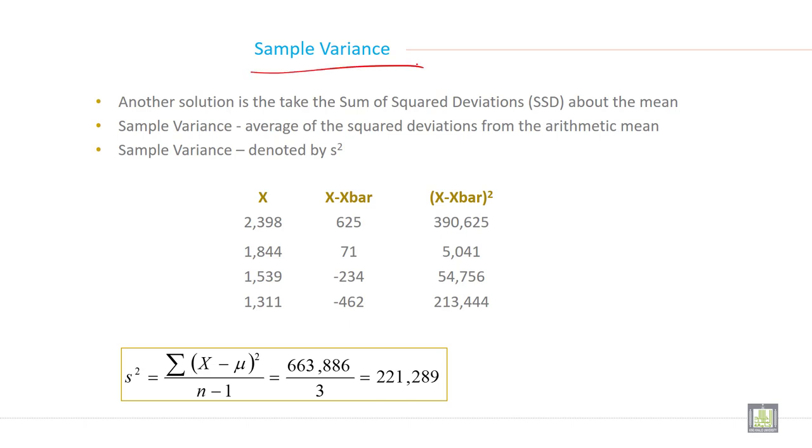Another solution is to take the sum of squared deviations, SSD, about the mean. Sample variance is the average of the squared deviations from the arithmetic mean and it is denoted by S square. The symbol for sample variance is S square.